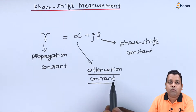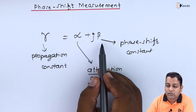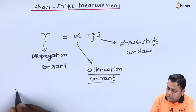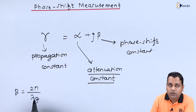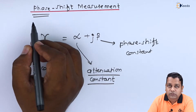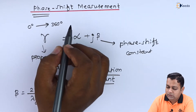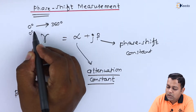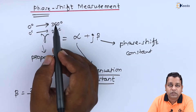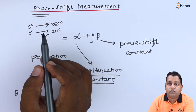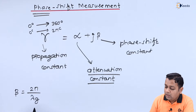Here alpha is the attenuation constant and beta is the phase shift constant, so the propagation constant equals alpha plus j·beta. In the previous video we covered attenuation measurement; here we address phase shift measurement. Phase shift information is accounted into beta, which is given by the formulation beta = 2π divided by lambda-g (guide wavelength). For one wave cycle, the phase goes from 0° to 360°, or equivalently 0 to 2π radians.